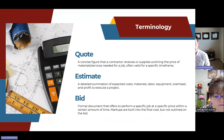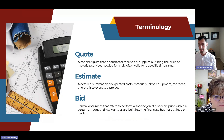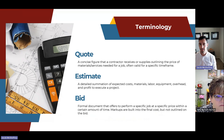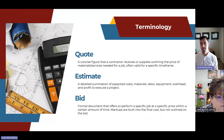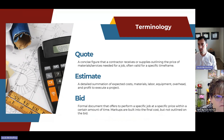A bid is the formal document that offers to perform a specific job at a specific price within a certain amount of time. The markups are built into the final cost, but they're not specifically outlined on the bid. If you're a subcontractor, you'll typically submit a quote to a prime contractor, while crafting an internal estimate for your own company. If you're a prime contractor soliciting directly to the government or owning agency, you'll submit a bid.